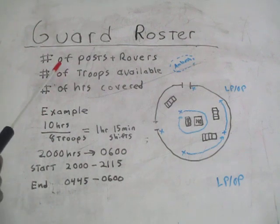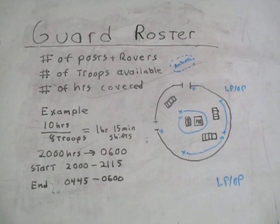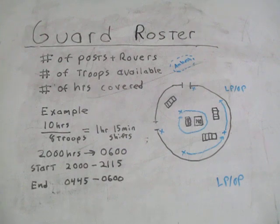Information you need to know: the number of posts and rovers used continuously during the rotation, the number of troops available for use over the rotation, and the number of hours that have to be covered during the rotation.